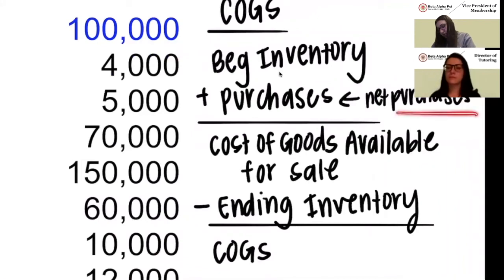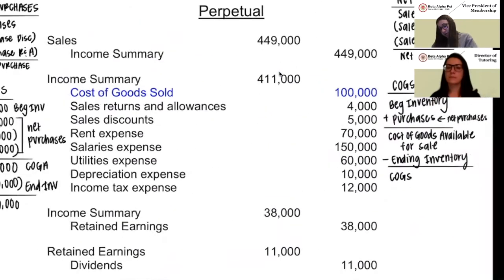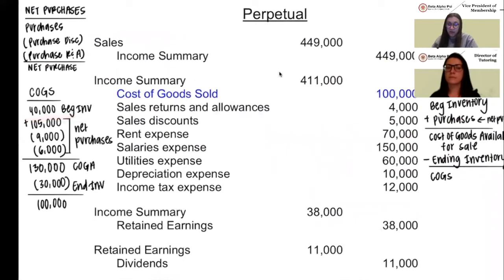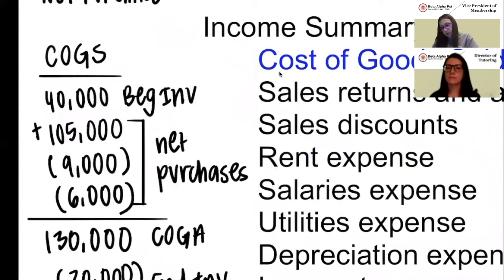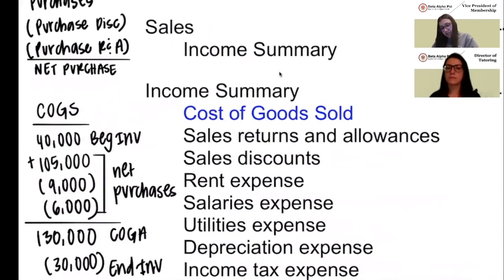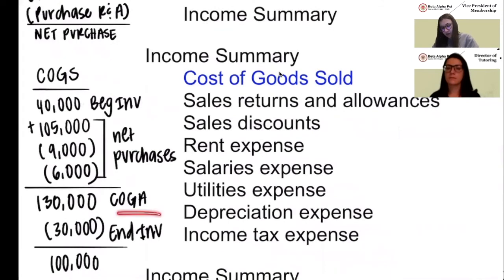The formula for cost of goods sold is: beginning inventory plus net purchases equals cost of goods available for sale, minus ending inventory equals cost of goods sold. Beginning inventory is $40,000. Net purchases = purchases ($105,000) minus purchase discounts ($9,000) minus purchase returns and allowances ($6,000) = $90,000. So cost of goods available for sale is $130,000, minus ending inventory of $30,000, which means cost of goods sold is $100,000.